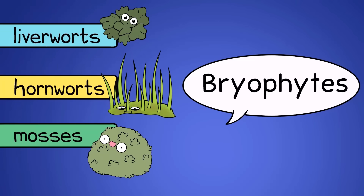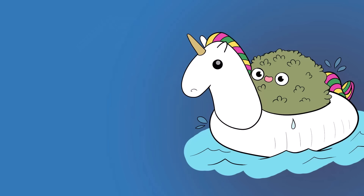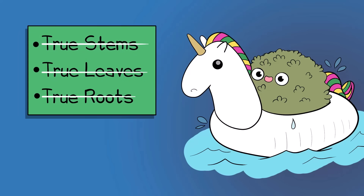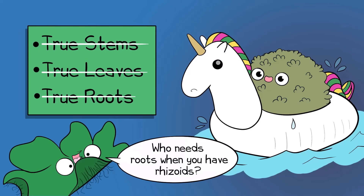The phylum that includes mosses is actually called bryophyta, so just be aware of the informal use of the word bryophytes. As they're non-vascular, bryophytes are generally small and are more frequently — but not always — found in areas where there is a lot of moisture. They do not have true stems, nor true leaves, nor true roots, although they can have structures that resemble them.